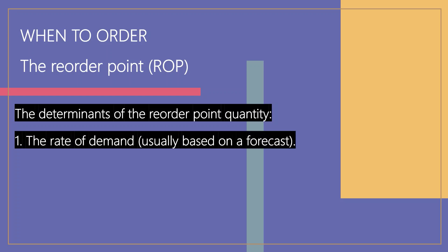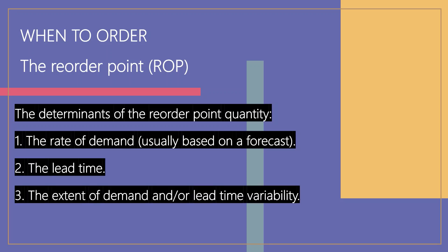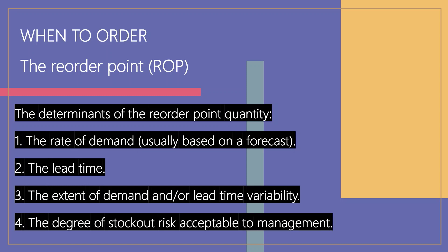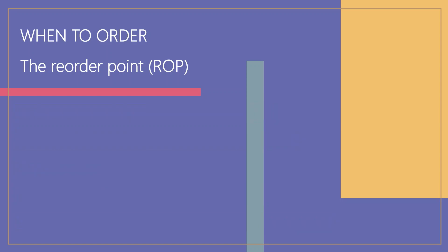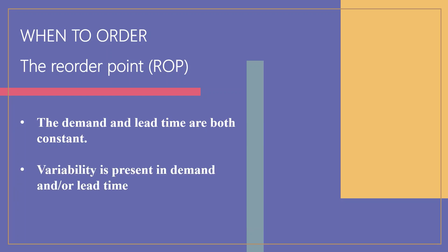The four determinants are: the rate of demand, usually based on a forecast; the lead time; the extent of demand and/or lead time variability; and the degree of stockout risk acceptable to management. There are two situations when calculating the reorder point. The first is when demand and lead time are both constant, while the second situation is when variability is present in demand and/or lead time.